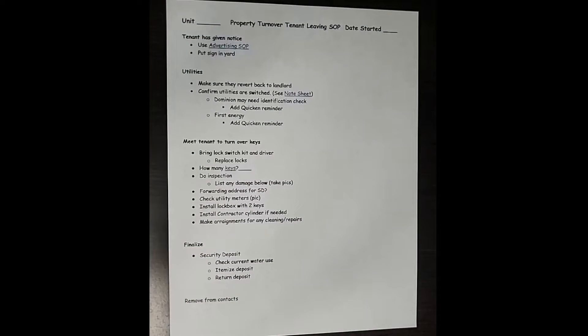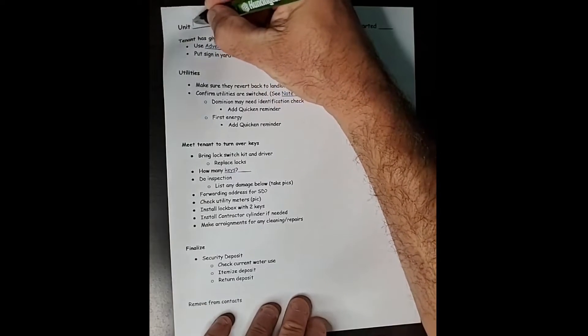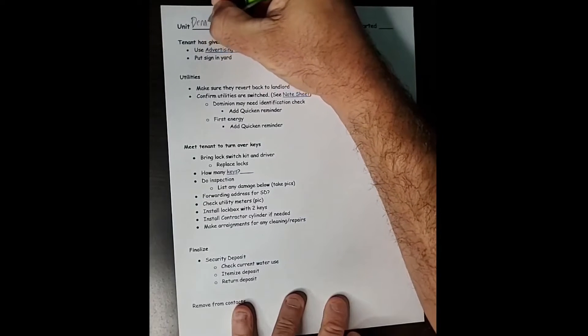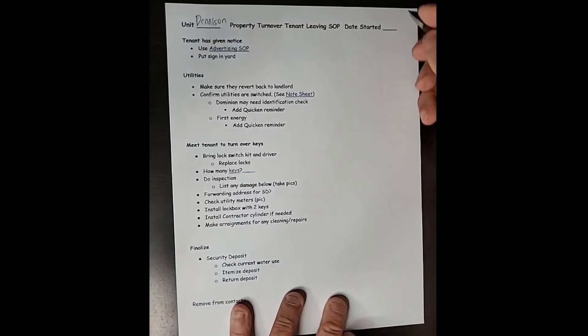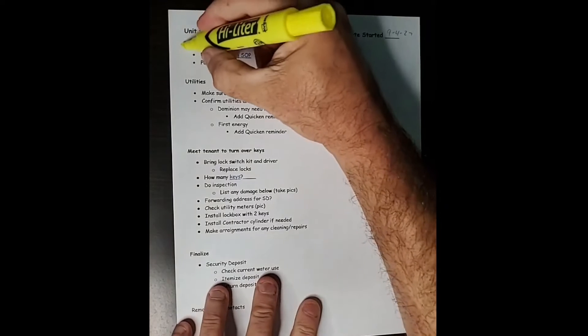So this is my property turnover tenant leaving standard operating procedure. The first thing I do when I get a notice that a tenant is leaving, I print one of these out. I will write the unit in there, and then I'll write the date started, which is, let's say this is 9-4-22. And then I get out my highlighter. So tenant has given notice. I highlight that that has happened.